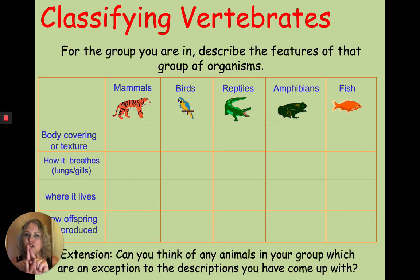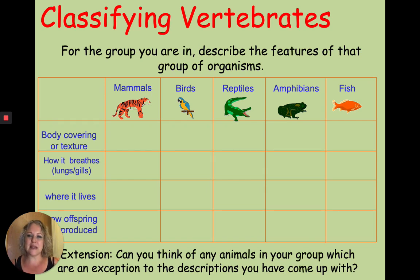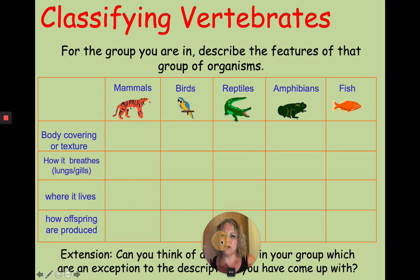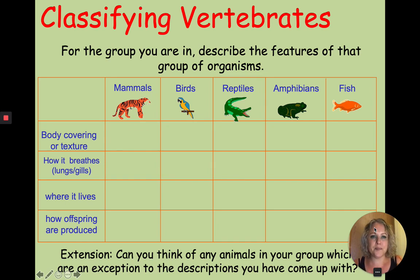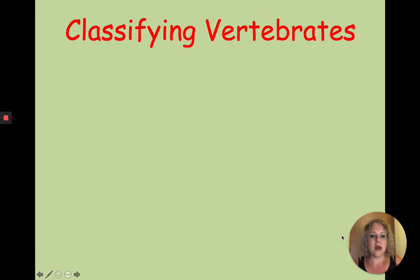If you're following on the worksheet attached to this lesson, have a go at this table. I want you to describe mammals: what's their body covering — feathers, fur, or scales? How do they breathe — lungs or gills? Whereabouts do they live? And how do they produce offspring — do they lay eggs or give birth to live young? Think about the animal in the picture to help you. There's a little extension task too. Pause the video and have a go.